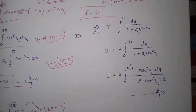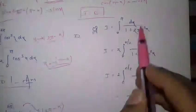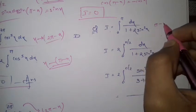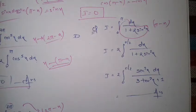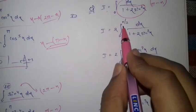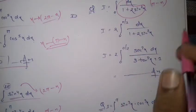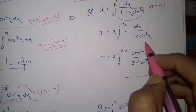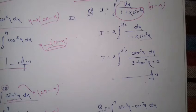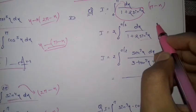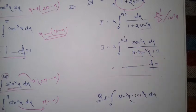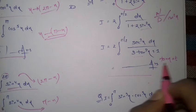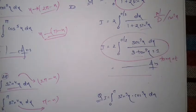This is an important property. The next question: I = ∫₀^π dx / (1 + 2sin²x). Check pi minus x — the function doesn't change, so write I = 2 ∫₀^(π/2) dx / (1 + 2sin²x). Applying the King Rule would make it complicated, so instead divide numerator and denominator by cos²x to get sec²x and tan x terms, then substitute t = tan x and solve as in indefinite integration.